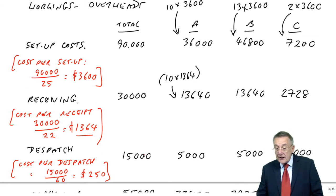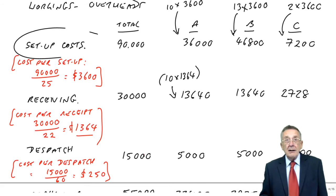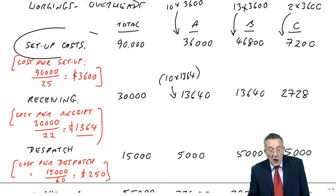With activity-based, we're forced to. We're forced to find out what's it being spent on. 90,000 was being spent on setting up machines, 30th on receiving goods, and so on.